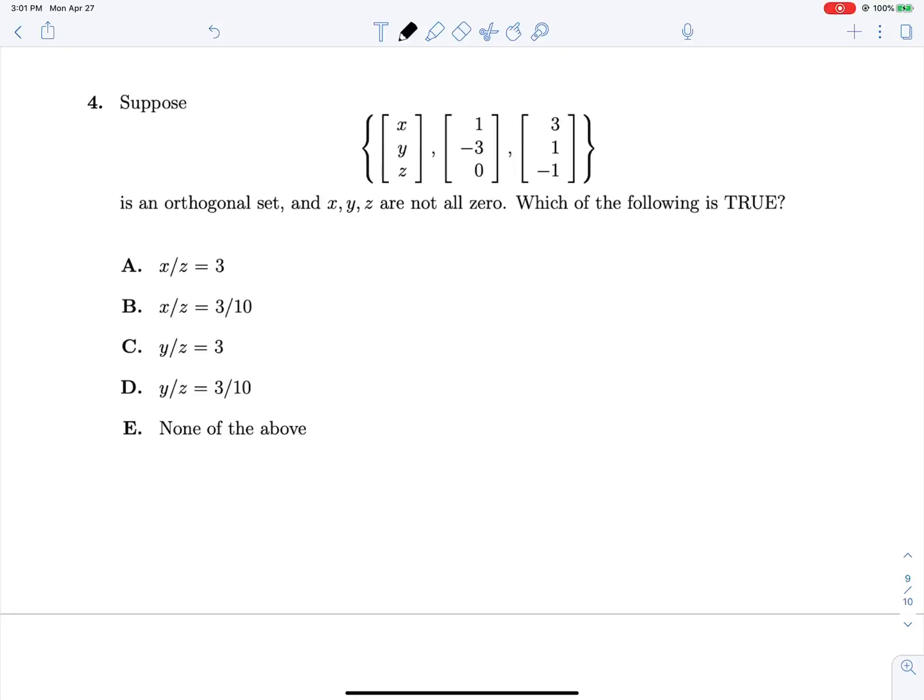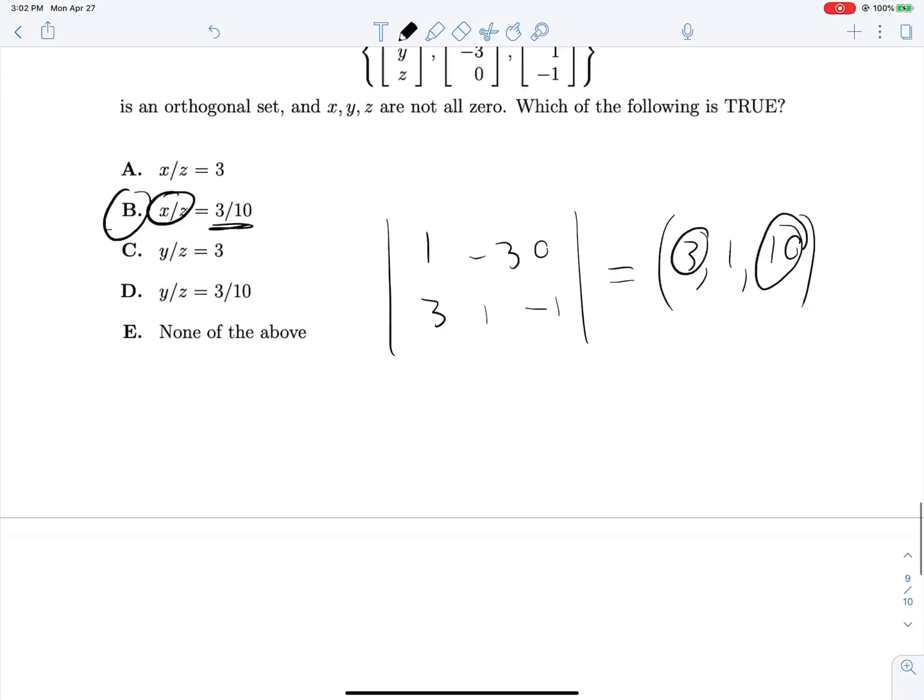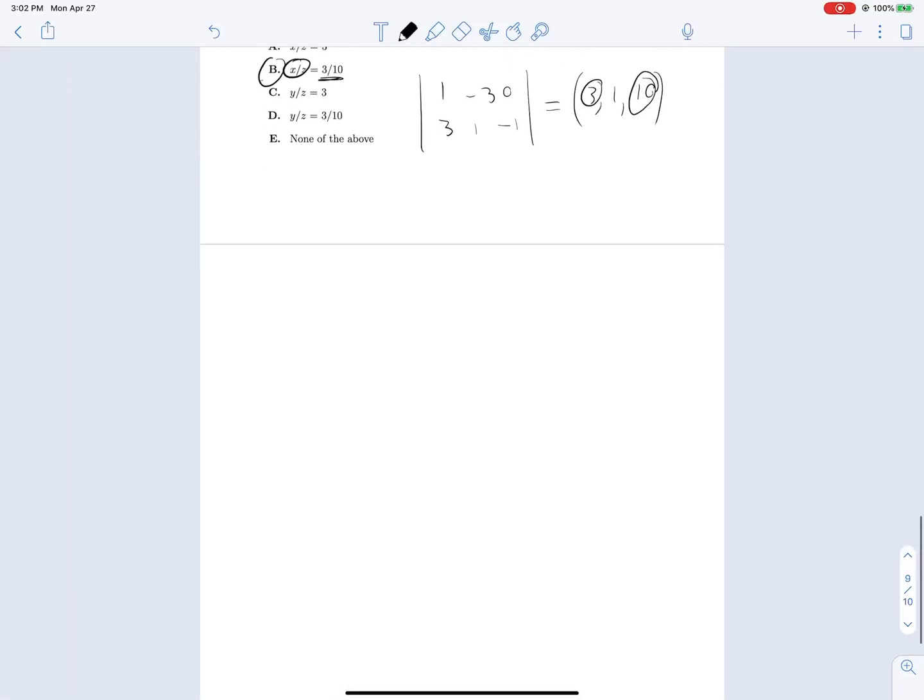Problem 4: We have an orthogonal set here, which of the following is true? This is the same kind of cross product in disguise that I was talking about earlier. We can cross 1, negative 3, 0 and 3, 1, negative 1, and get the general form of a vector that we know to be orthogonal to both of these guys. That will give us 3, 1, and 10. And so x over z should be 3 over 10. That's all there is. And that's all there is in this entire set, too.